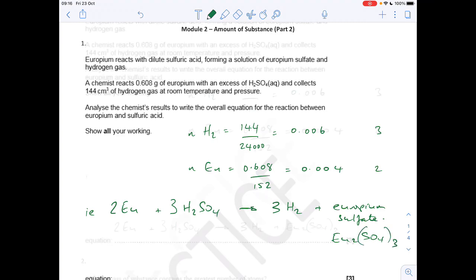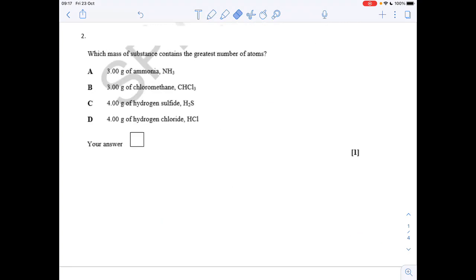Question two: there's a lot to do here for this one measly mark. The first thing I'm going to do is work out how many moles of each substance we've got. Mass over Mr, so I'll just do that first.